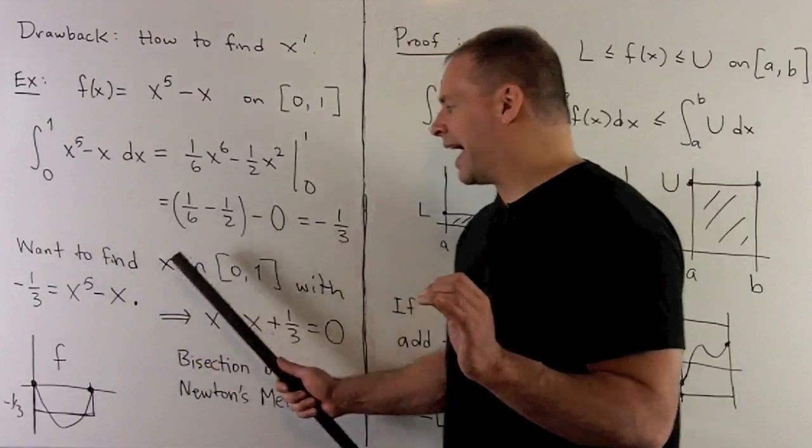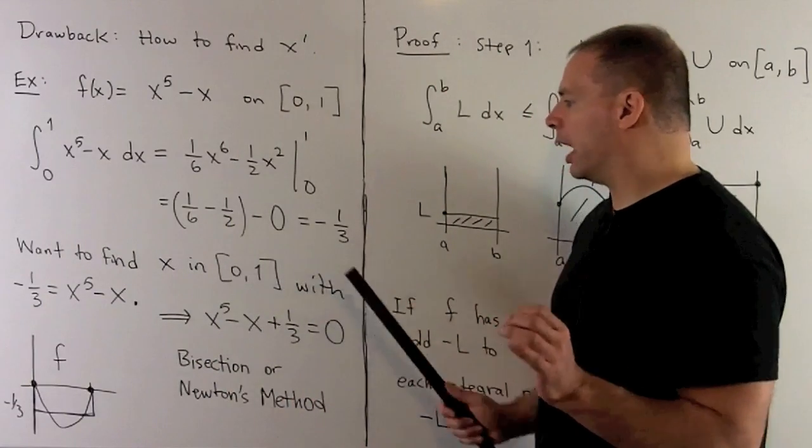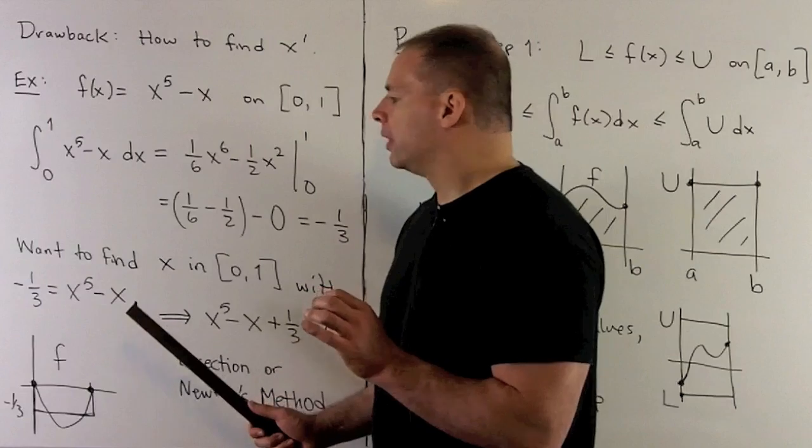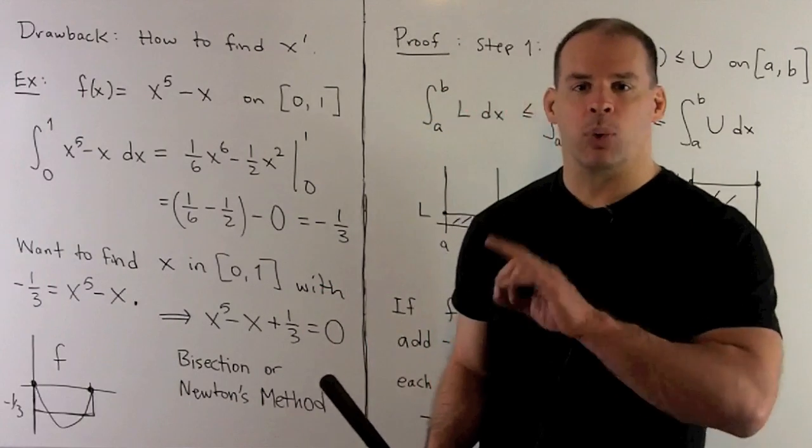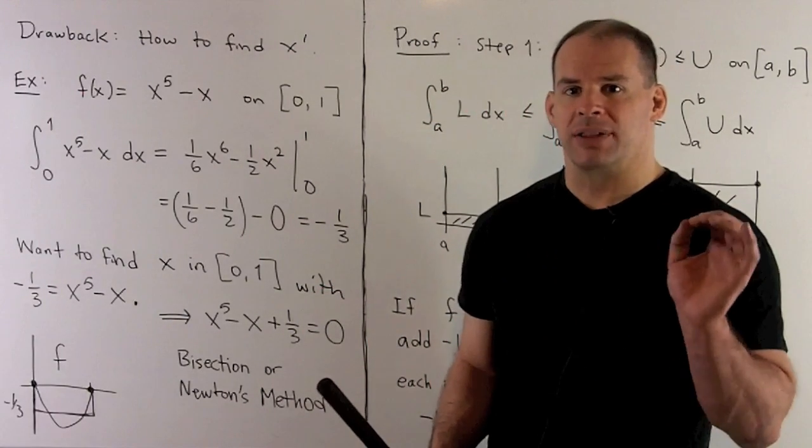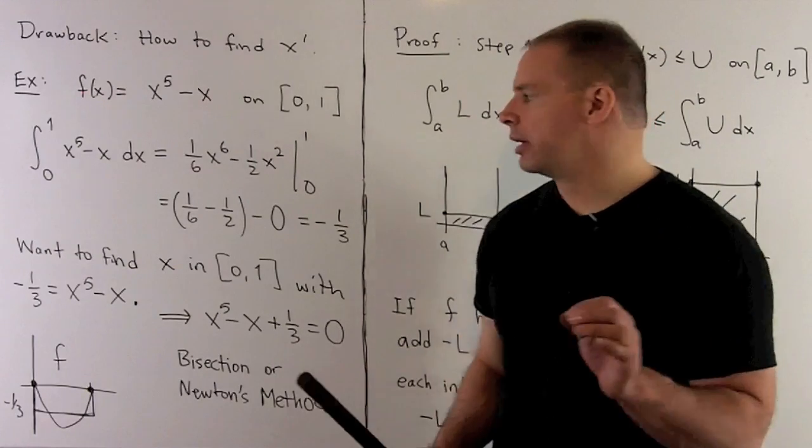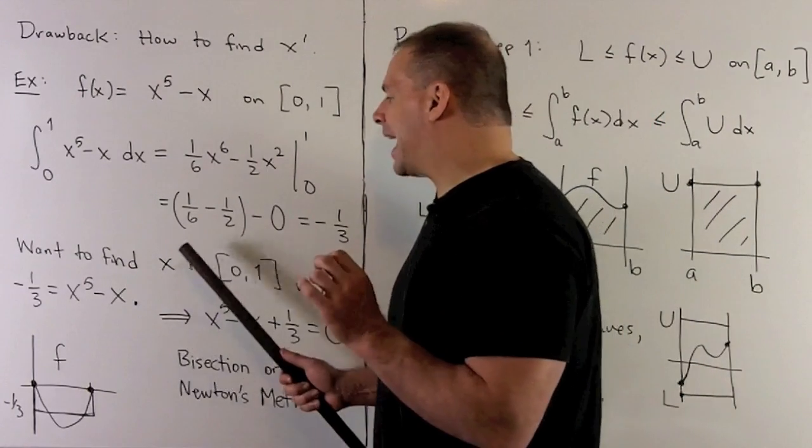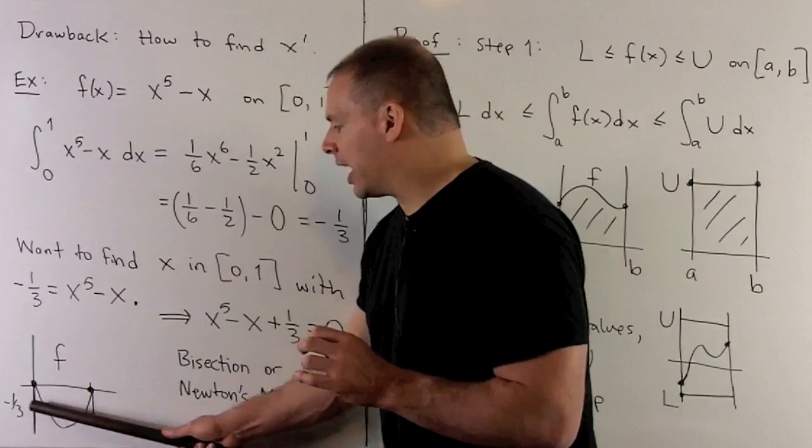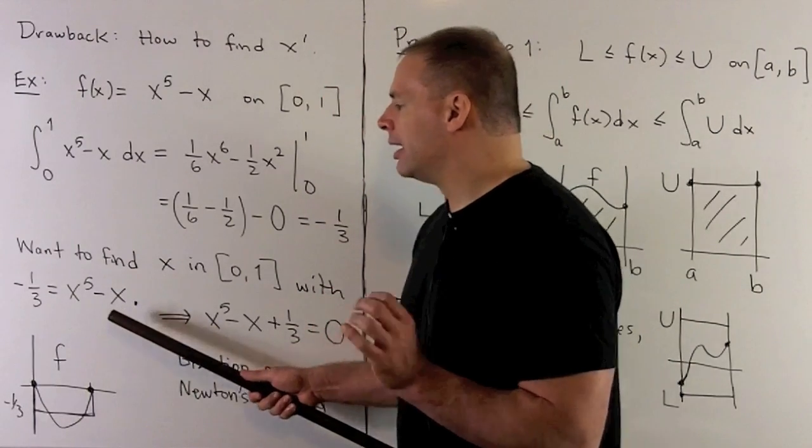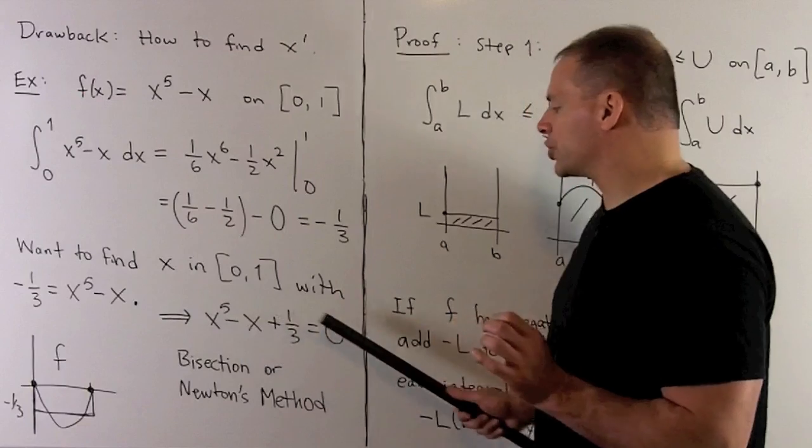So, the idea is, I want to find an x in our interval from 0 to 1 with minus 1/3 equal to - okay, we're going to apply f to that point. So, it's going to give me x^5 - x. Then, we multiply by the length of the base, which is just 1. So, if I want to know the x that gives me this height, I'm going to have to solve this equation here.